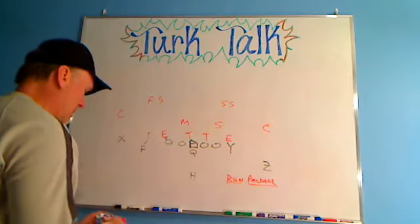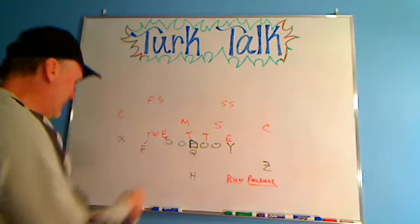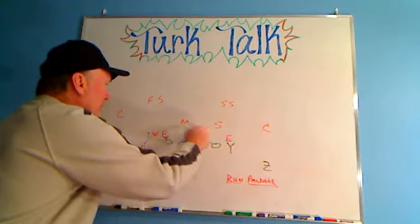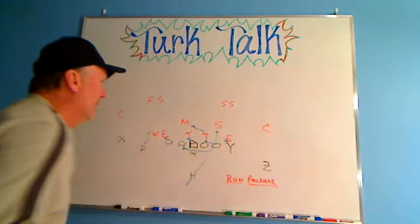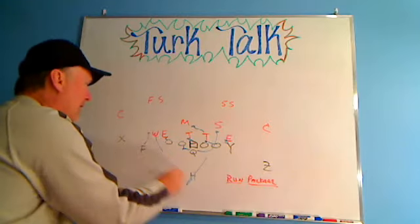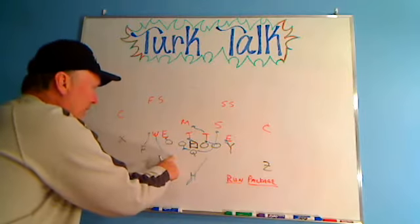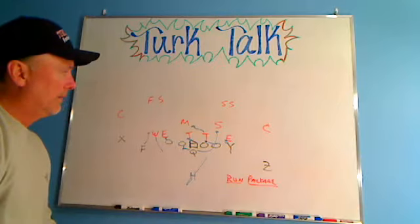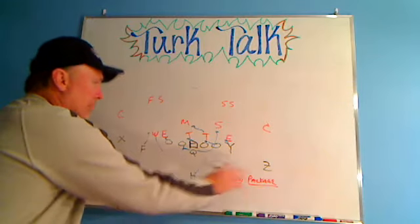We ran power because the Will was kind of in between — not a good look to run at it, so we run away and run power. The center blocks back, these guys double up to the Mike, the tight end has his block, the guard pulls around with a drop step, and we run power right there. If that guy delays and comes late he won't catch it. But if he gets right on the end of the line of scrimmage like he's coming — we'd consider that seven in the box and the quarterback would go to the pass game.